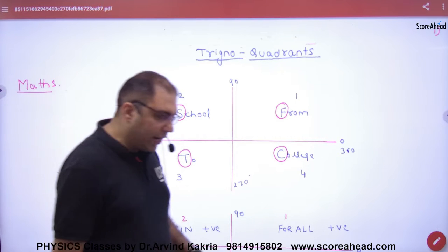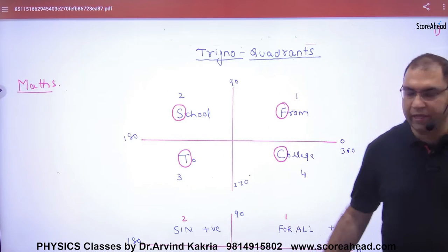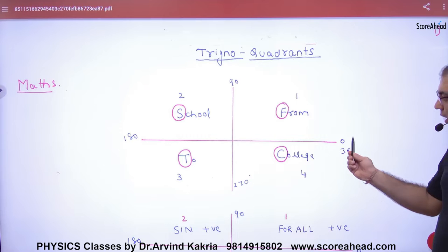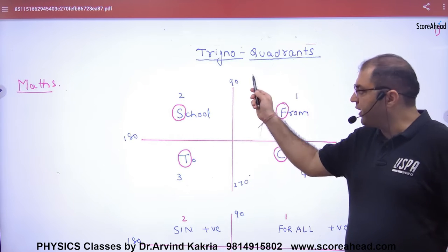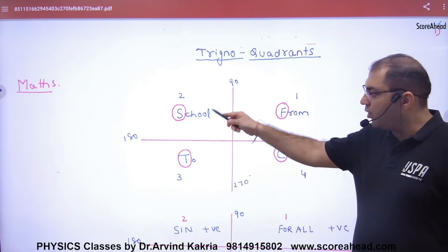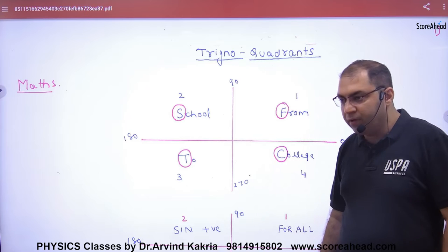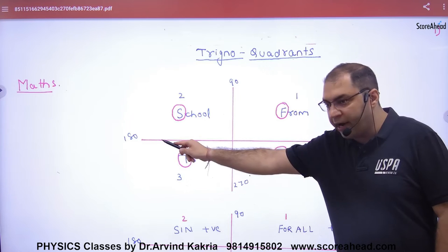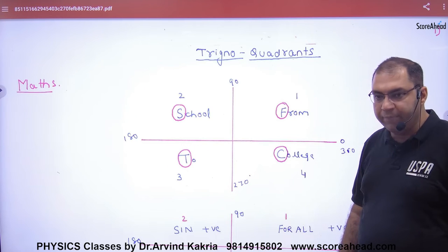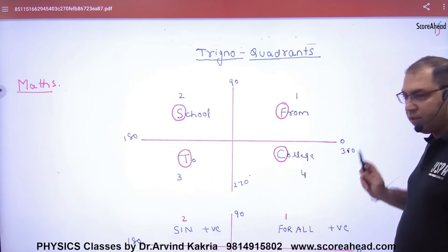We plot standard angles along these axes. Starting at 0 degrees, we go 90 degrees to get this line at 90. Adding another 90 gives 180, then 270, and finally adding 90 more gives 360.